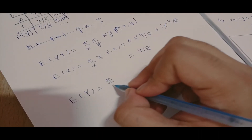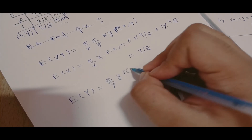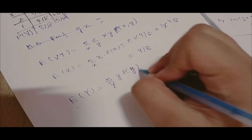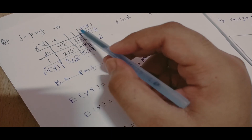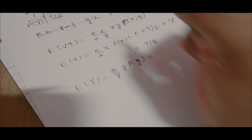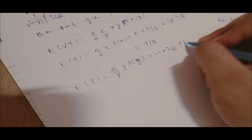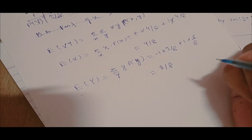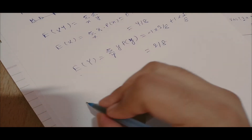E(Y) = summation of y·P(y) = (-1)(3/8) + (1)(5/8) = -3/8 + 5/8 = 2/8.